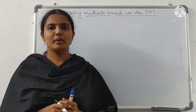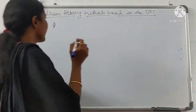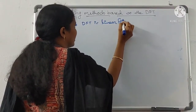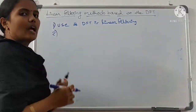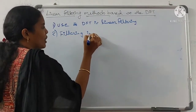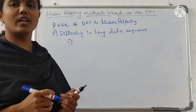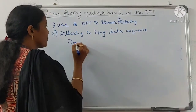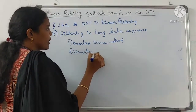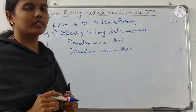These linear filtering methods based on DFT are: first, use of DFT in linear filtering; and second, filtering in long data sequences. In long data sequences, we have two different methods: one is the overlap save method and the other is the overlap add method.